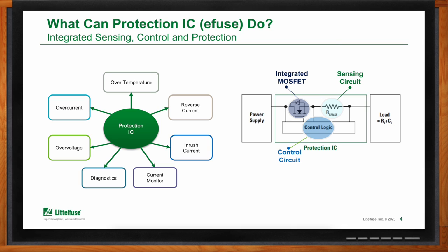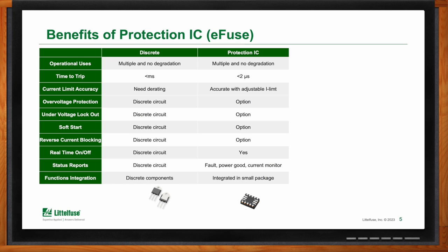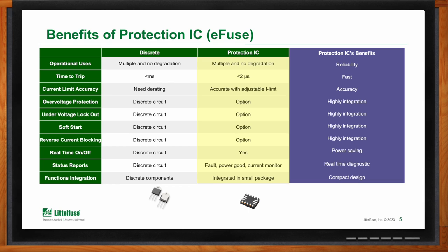How does the protection IC compare with other solutions like fuses, discrete components, or PPTCs? If you wanted to implement both overcurrent and overvoltage protection plus other features, you may need several discrete components. Using a protection IC, you get all the integrated features in a single package — reliability, very fast response, high accuracy, and it is highly integrated with multiple different features, power saving, and real-time diagnostics.